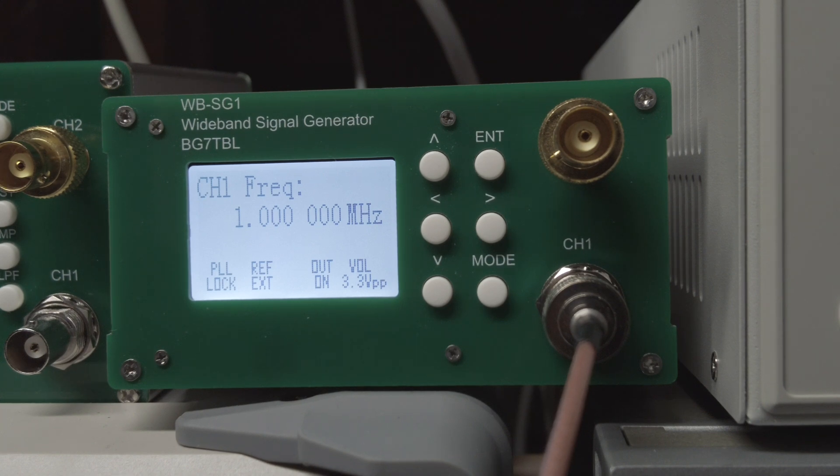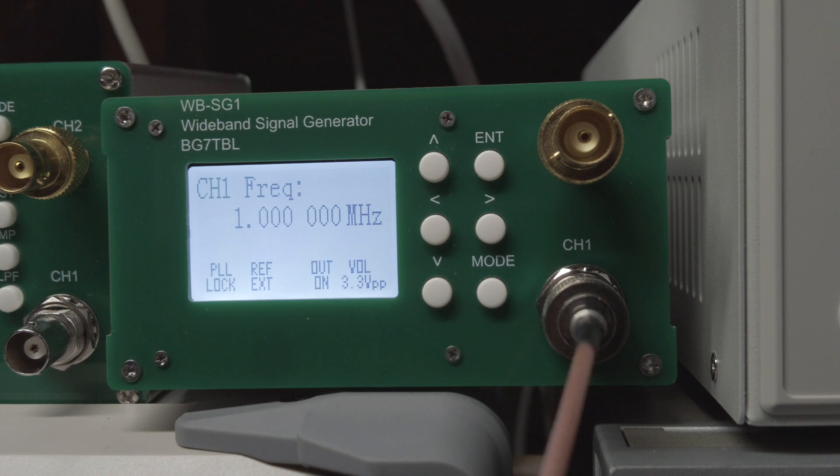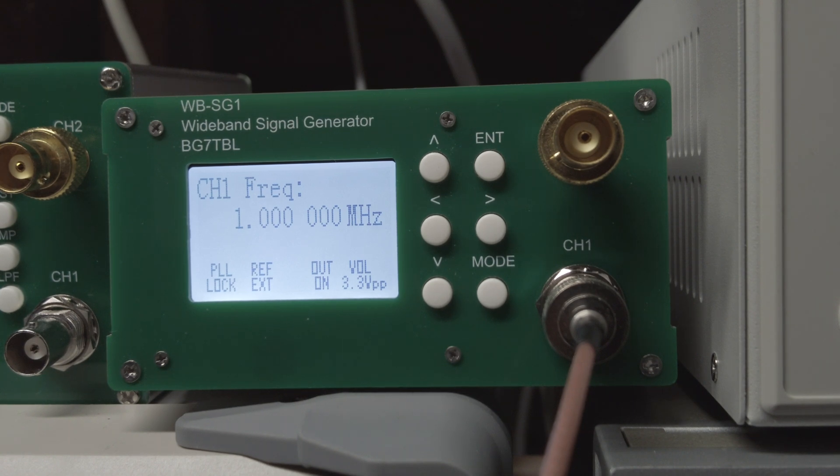Our first up today is an RF signal generator. This is the BG7TBL WB-SG1 RF signal generator. It can output an RF signal from one hertz all the way up to eight gigahertz. For those of you who don't know what this is, you can think of it as an all-band transmitter. You dial in a frequency and switch it on, and it's basically like dialing your radio to the same frequency and putting down the key.